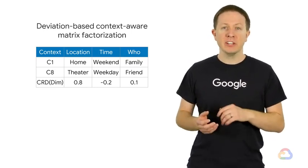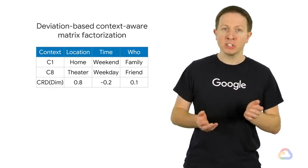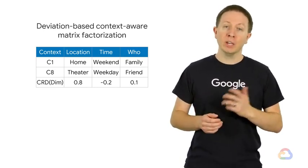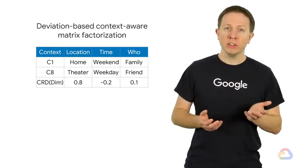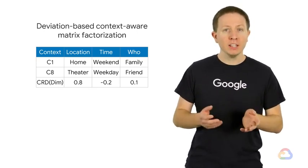The CRD for time is a negative 0.2, which means that users' ratings in the time dimension are generally 0.2 lower for weekday than weekend. The CRD for who the user watched the movie with is 0.1, which is generally 0.1 higher for friend than for family.